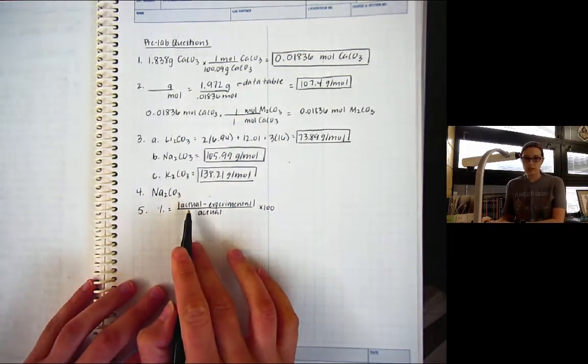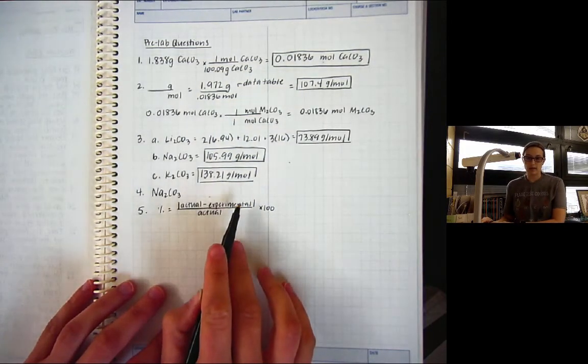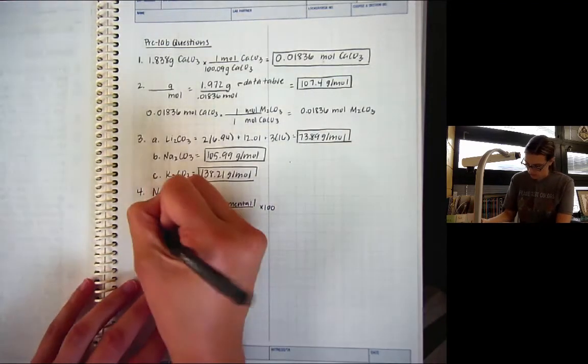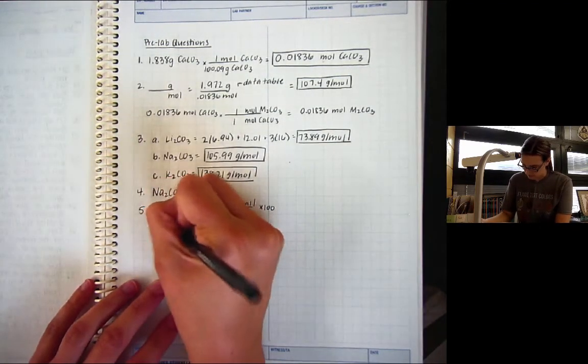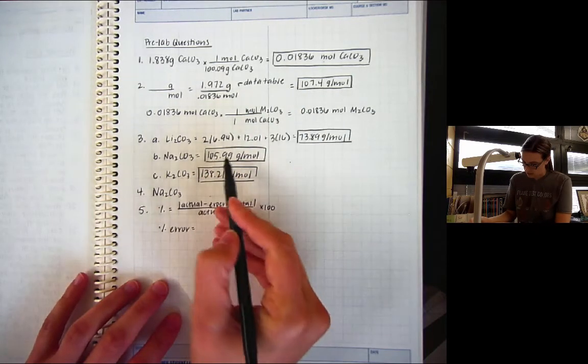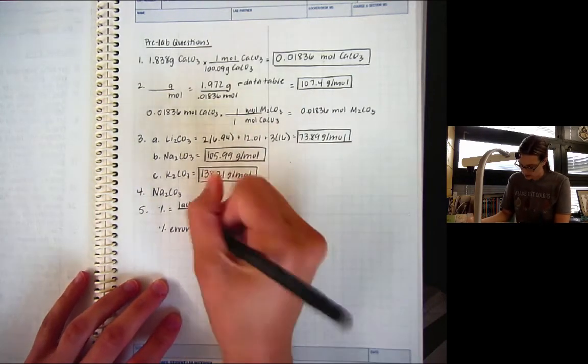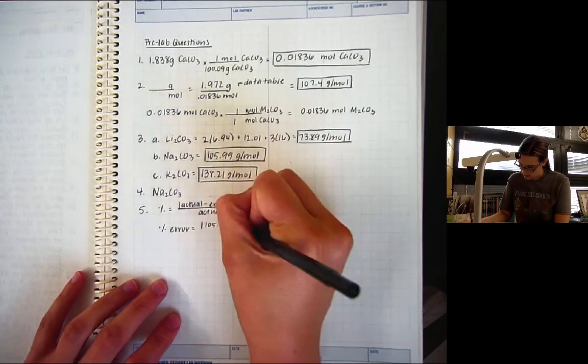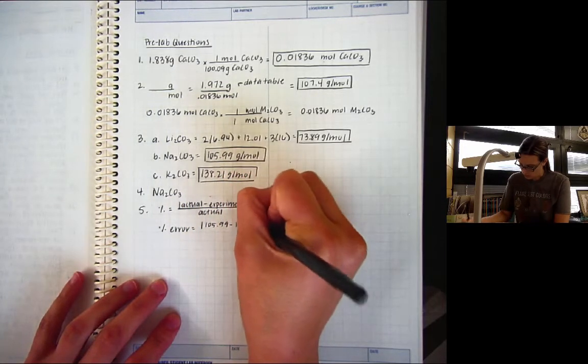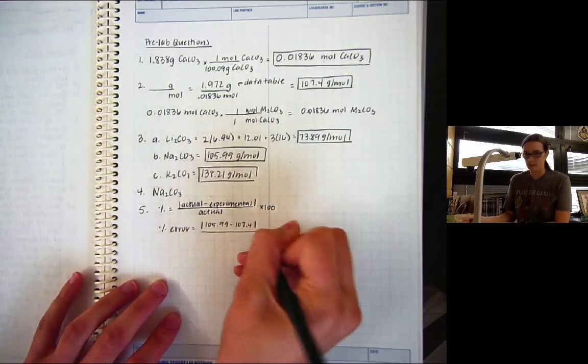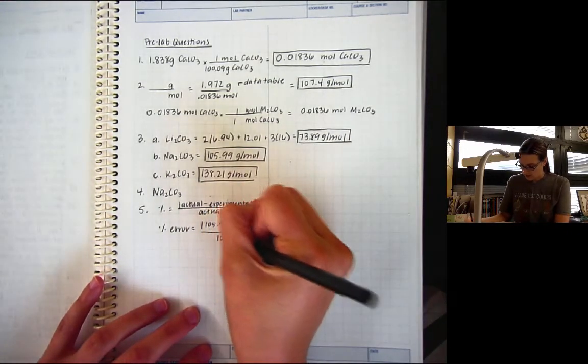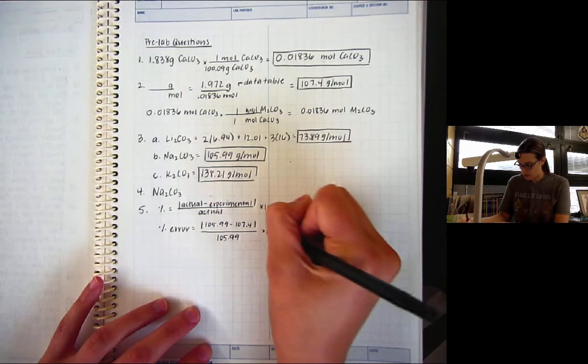So, actual is what's the number actually supposed to be. Experimental is what did we collect in lab. So, for percent error for number 5, the actual value is from the periodic table. So, 105.99 minus 107.4. We're going to take the absolute value. So, that just means that the top number should always be positive. We're going to divide by actual times 100.